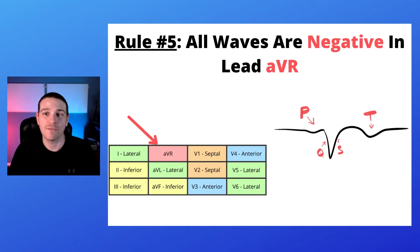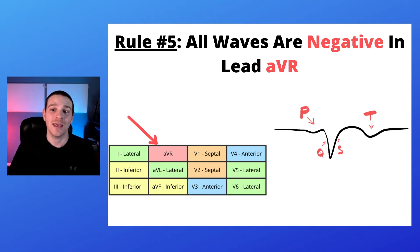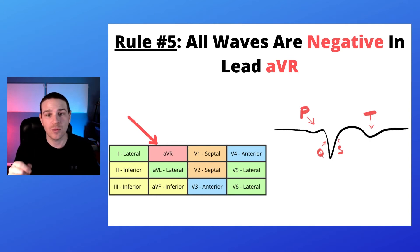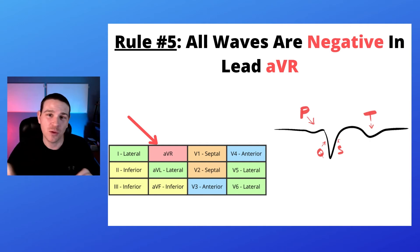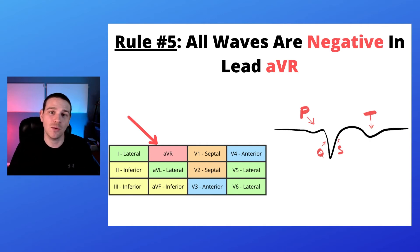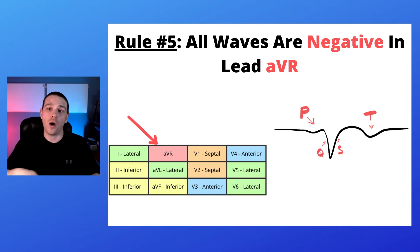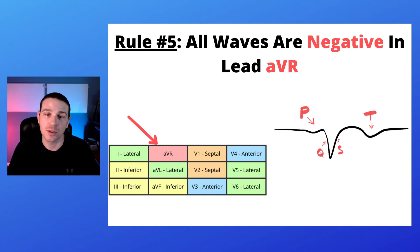Rule number five: all waves are negative in AVR. You can see where AVR's placement is, and if you look at the image next to it, you can see that the P wave, the Q wave, the S wave, and the T wave are all negative, which is below the isoelectric line.